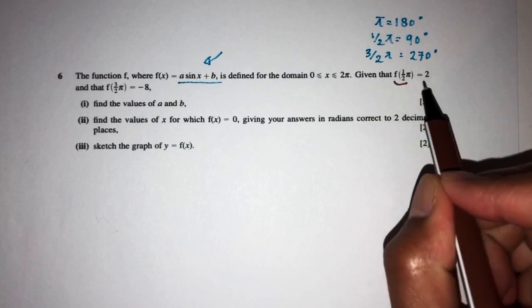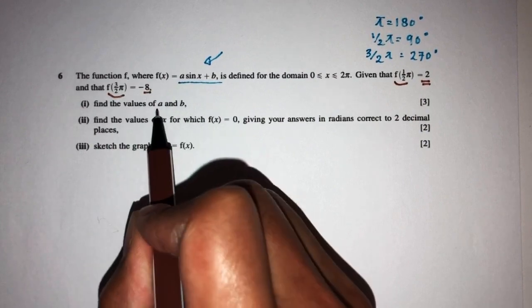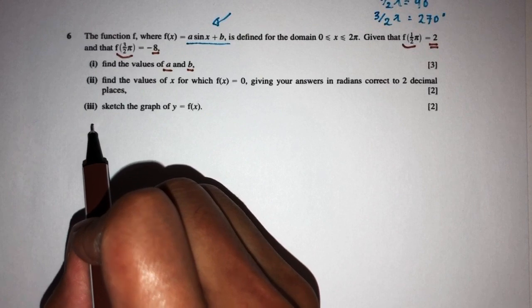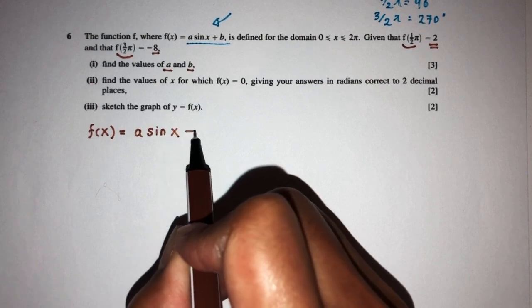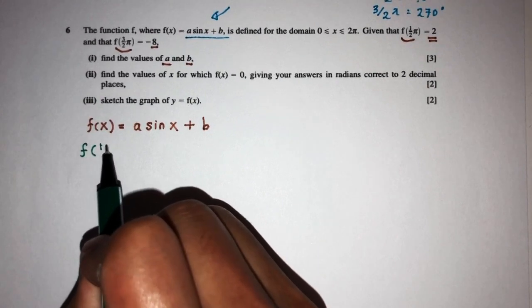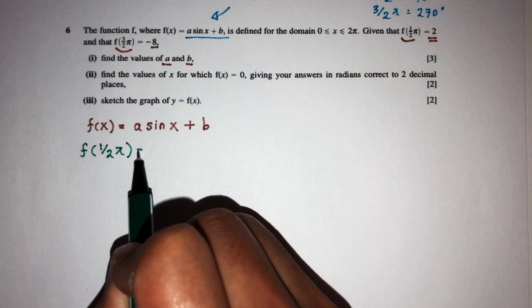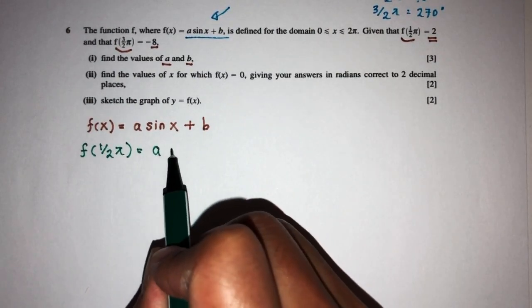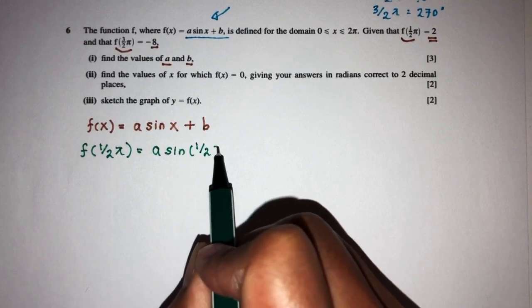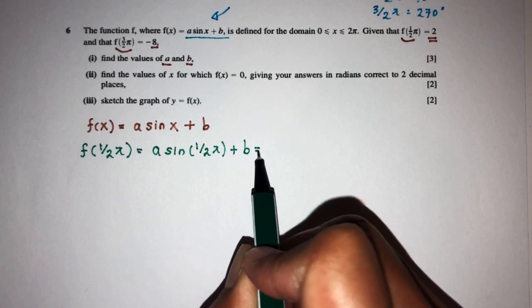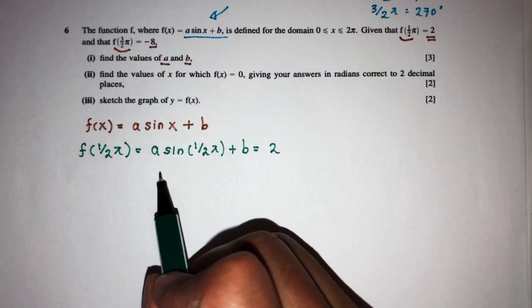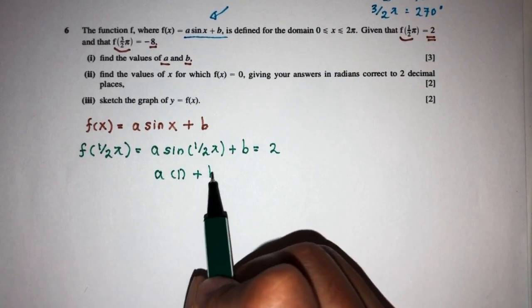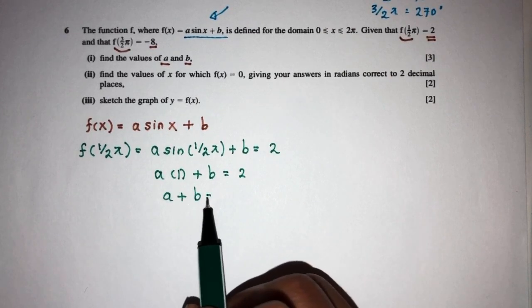So we're given two values that we can use to find the value of a and b for part 1. We're given f of x is equal to a sine x plus b. Now, f of half pi is equal to 2, so we replace: a sine of half pi plus b equals 2. Since sine 90 equals 1, we have a times 1 plus b equals 2, giving us equation 1: a plus b equals 2.